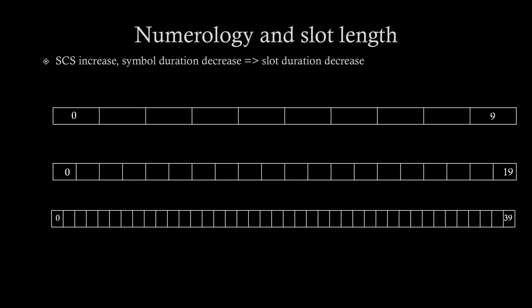Now, going in a little bit detailed description of numerologies and slot length relation. Here we can see that as subcarrier spacing increases symbol duration decreases which implies that slot duration decreases. Here we can see that for 15 kHz case there are 10 number of slots. For 30 kHz case there are 20 slots and for 60 kHz case there are 40 slots.